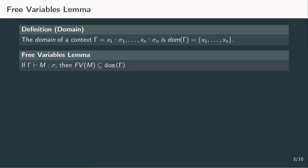The free variables lemma states that if we have a judgment, gamma yields m of type sigma, then all free variables of m need to be in the domain of gamma.